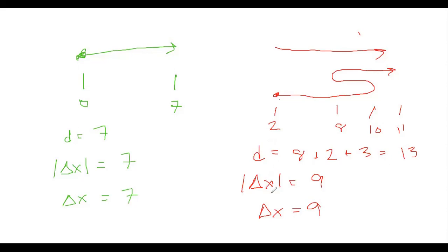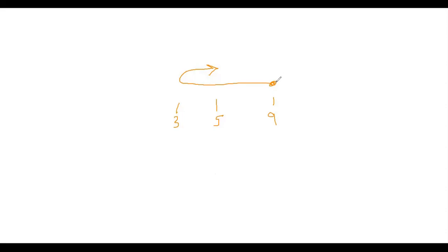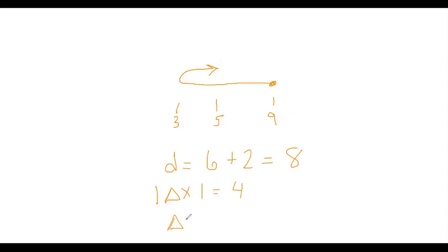That's the difference between distance, magnitude of displacement, and displacement. In another example: we start at nine, come around, and end up at five. The distance traveled is six plus two, which is eight units. The magnitude of displacement is four — we start at nine and end at five. The actual displacement from start to finish is negative four, because we're going in the negative direction.